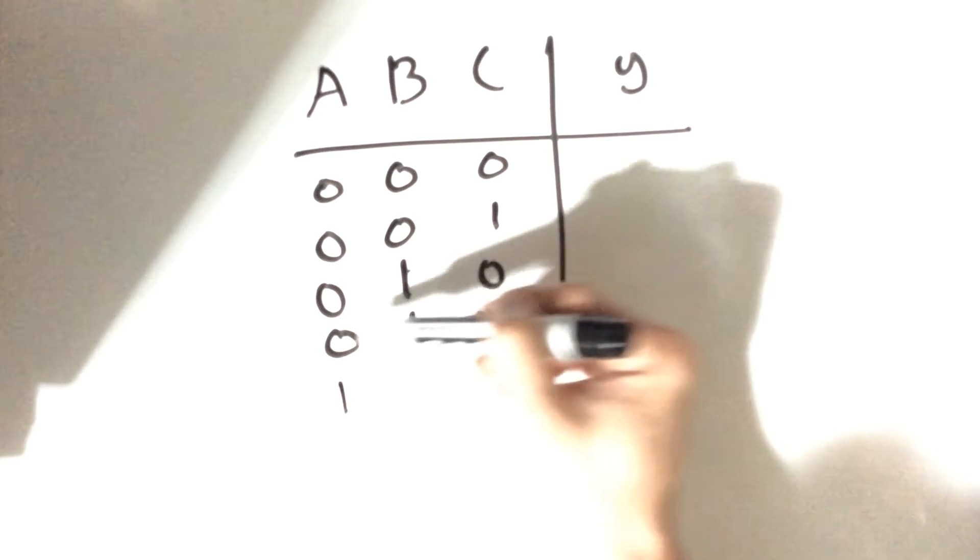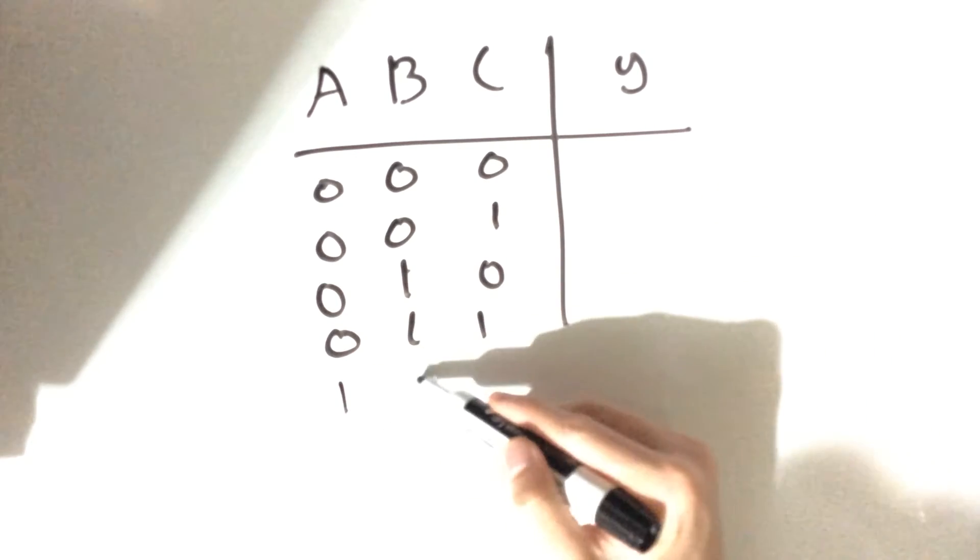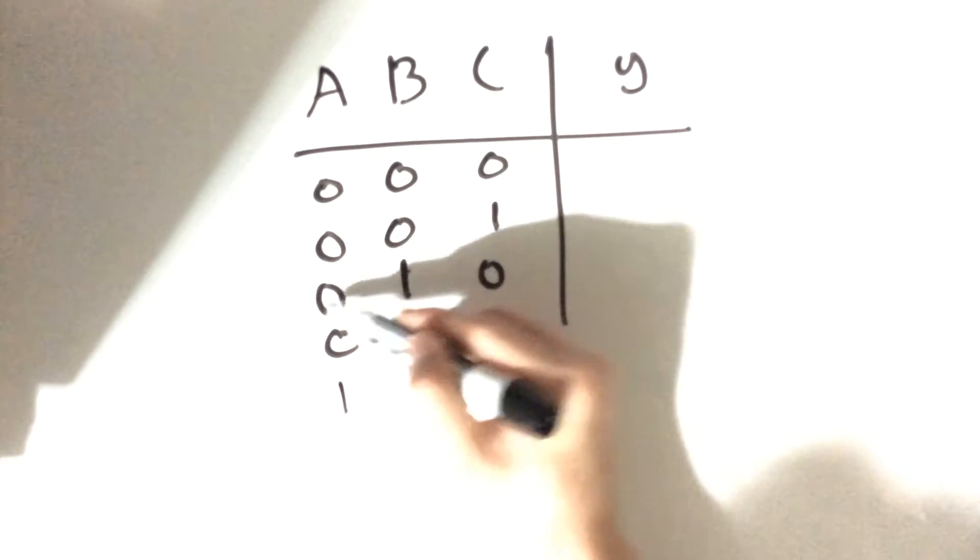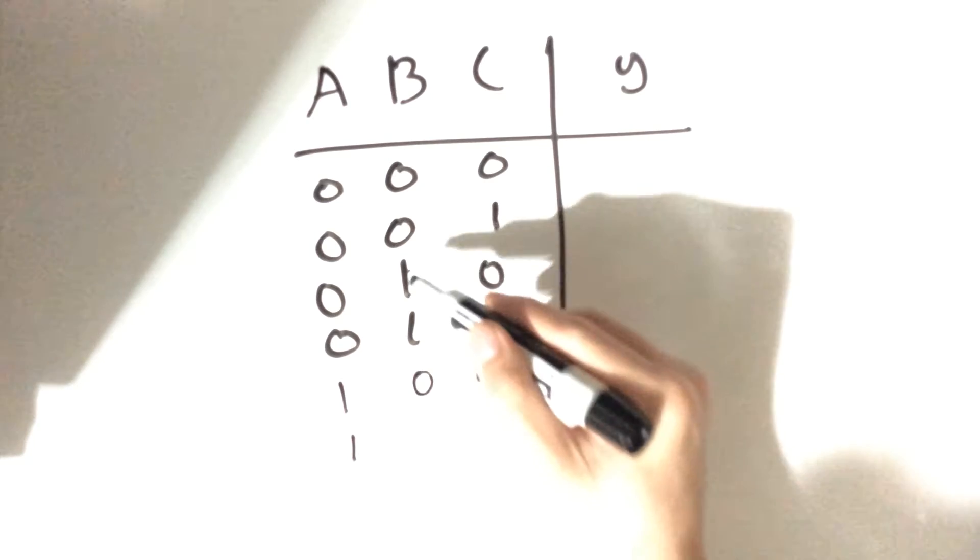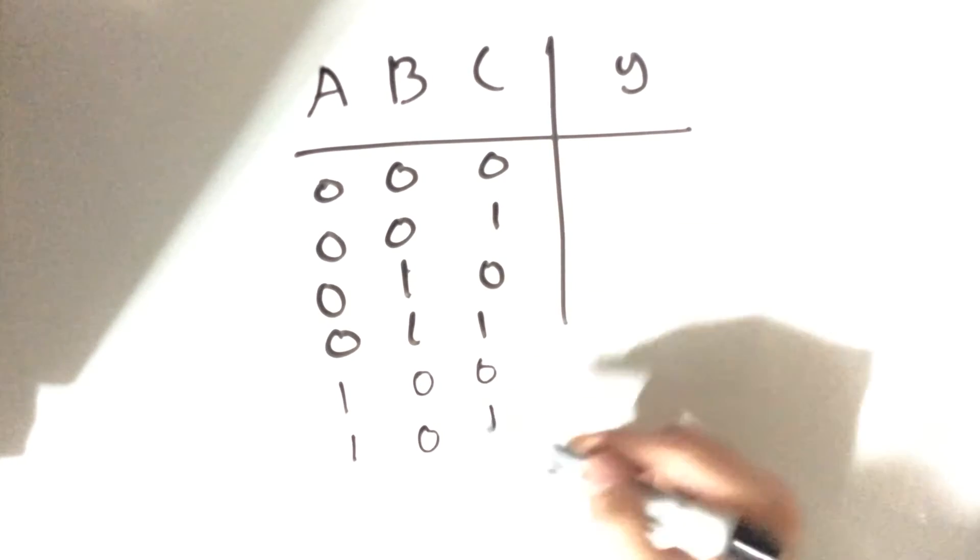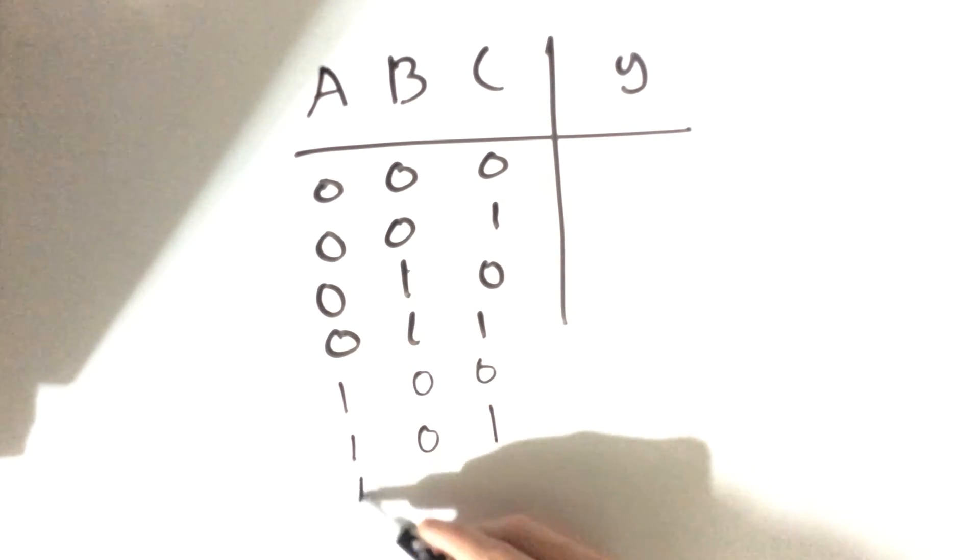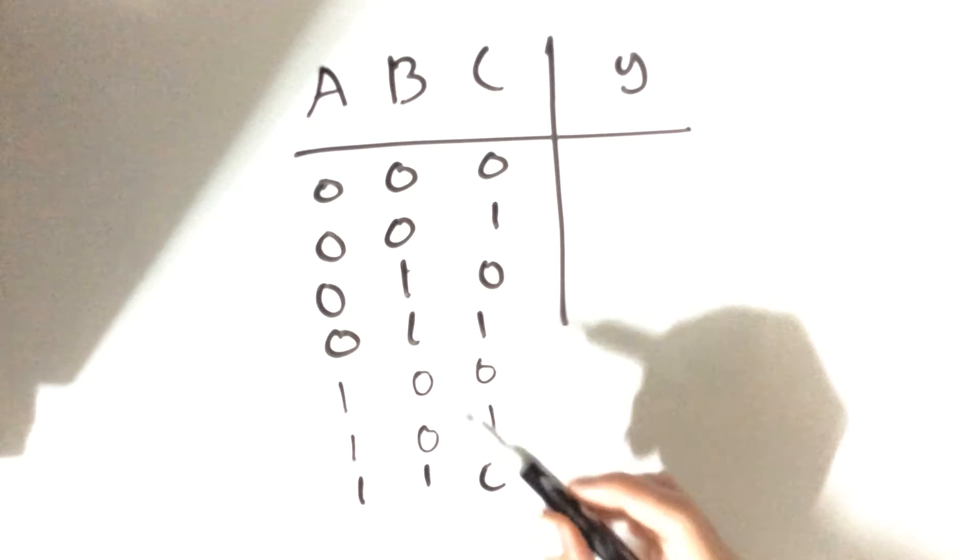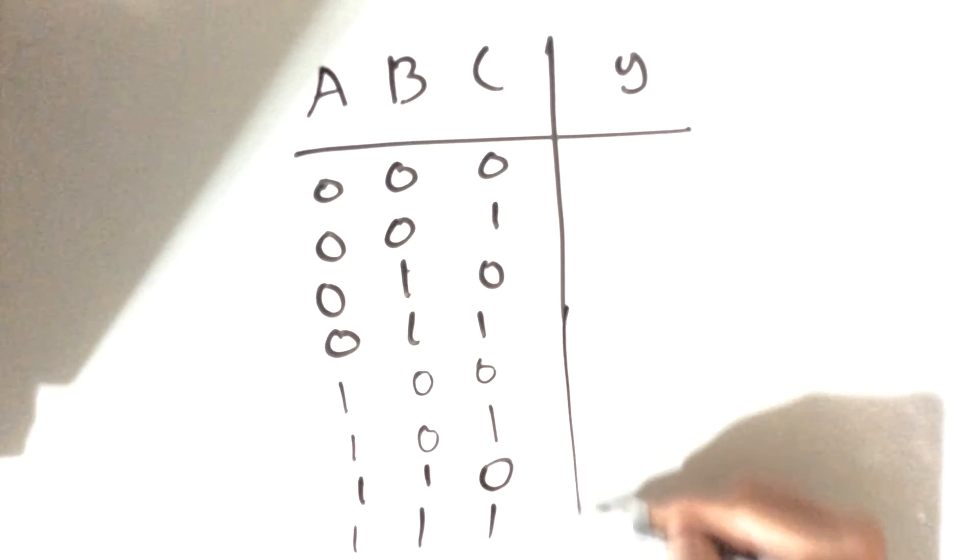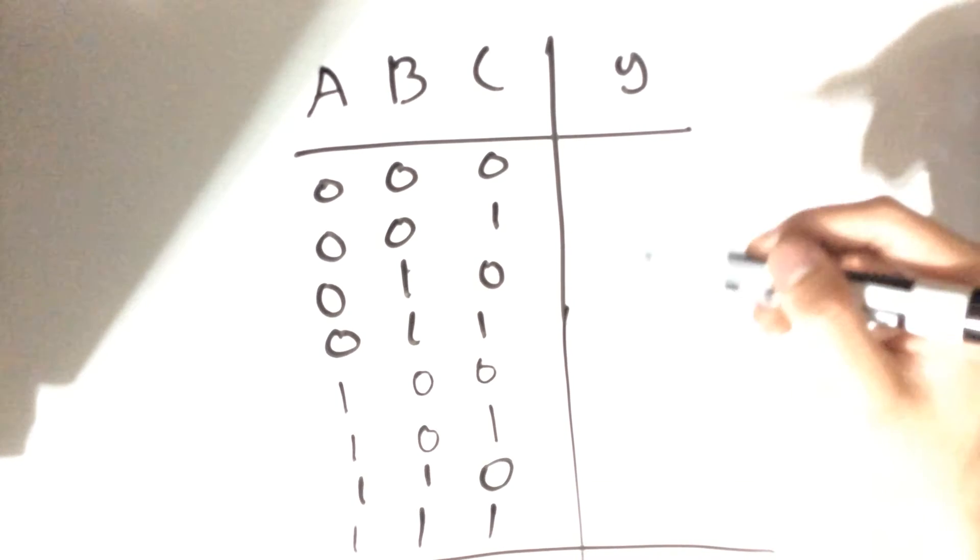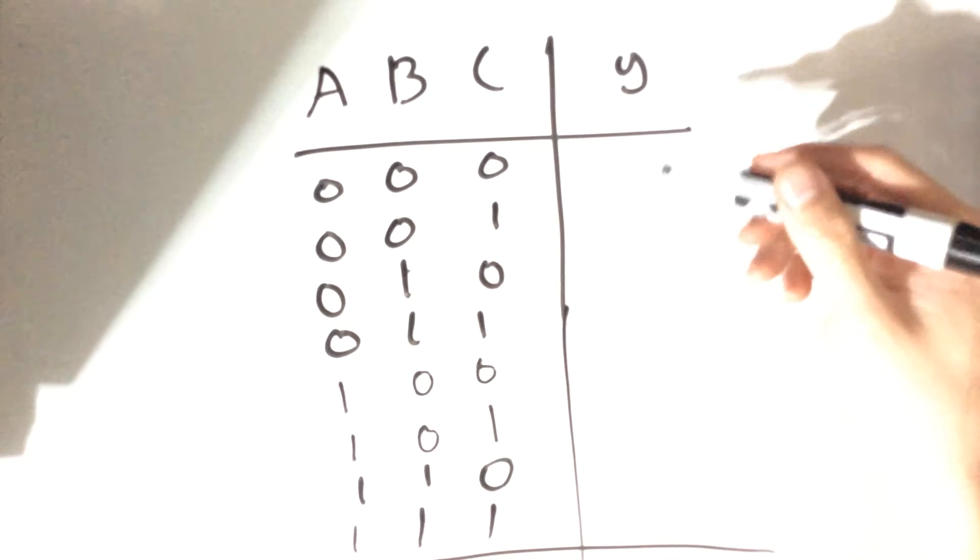Basically I like all my zeros to be lined up here. Then I would invert these values, so we'd have 1, 0, 0; 1, 0, 1; then 1, 1, 0; and lastly 1, 1, 1. That is how I personally like to draw my truth tables out.